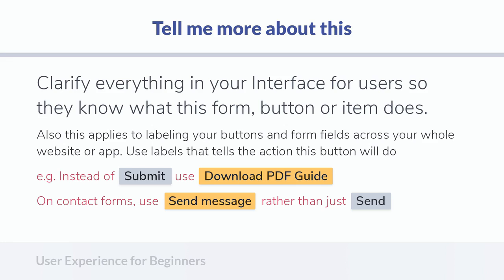To effectively use natural language in your interfaces, mobile apps, buttons, or labels, you need to tell your user what a form is about, what a button does, and what each item does. Use very descriptive labels for your buttons, form fields, and navigational items. Instead of using 'Submit,' you can use 'Download PDF Files.' On your contact forms, instead of 'Send' or 'Submit,' it is better to use 'Send Message' — which is more descriptive.